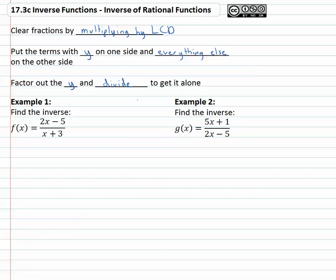For example, we're asked to find the inverse of f(x) = (2x - 5)/(x + 3). We know that f(x) is really y equals (2x - 5)/(x + 3). And to find the inverse, we have to change all the x's to y's and change the y to an x. So what we're really saying is x equals (2y - 5)/(y + 3).